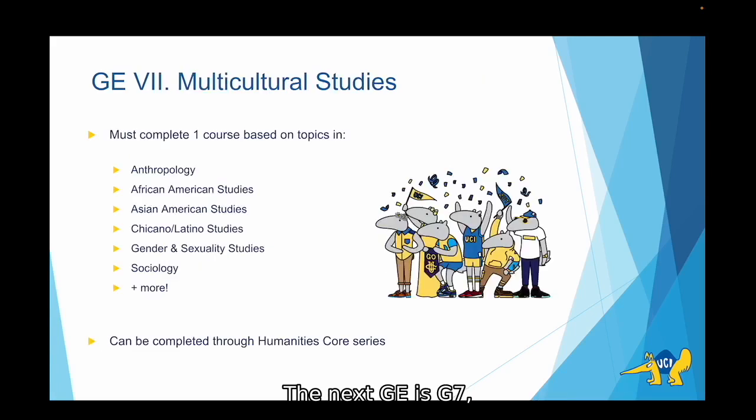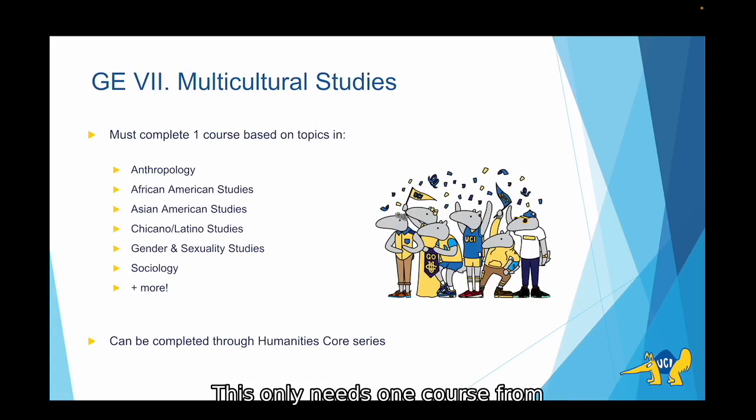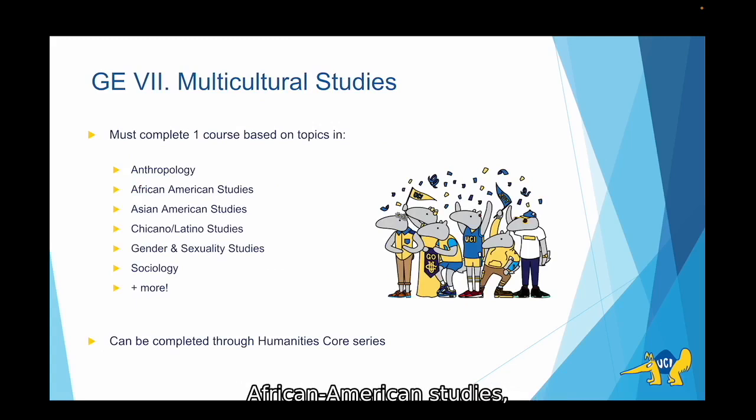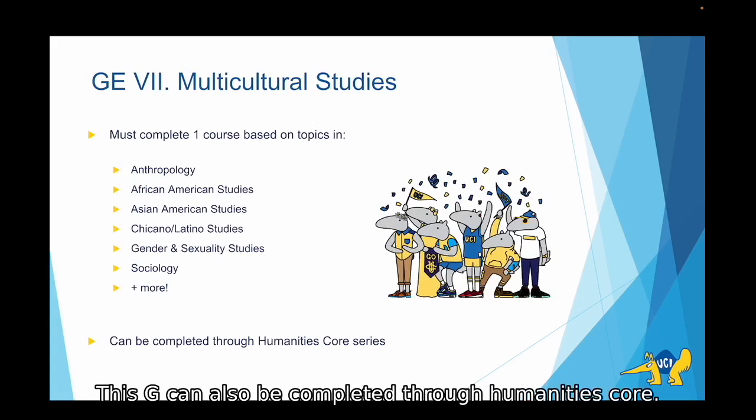The next GE is GE 7, Multicultural Studies. This only needs one course from a discipline such as Anthropology, African American studies, Asian American studies, and many more. This GE can also be completed through Humanities Core.